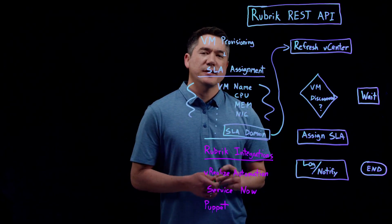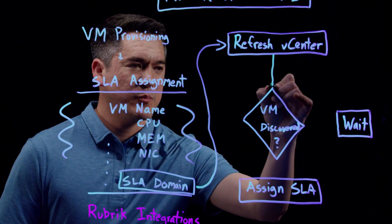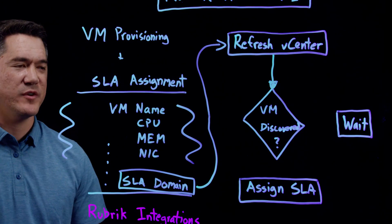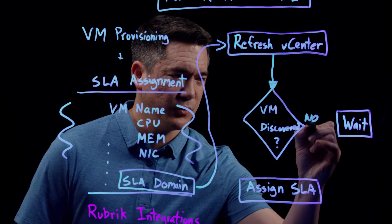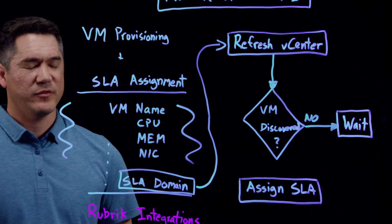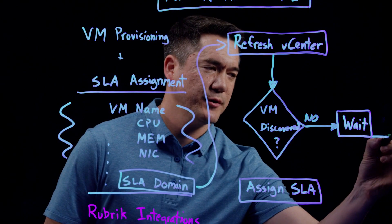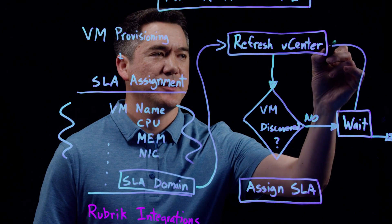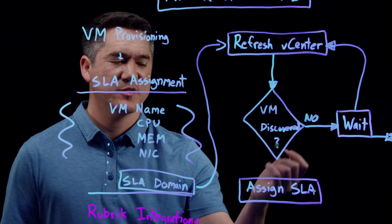We can basically update the vCenter information on Rubrik with a refresh call. Once this is done, we can pass it down to a check — we're going to check to see if this newly provisioned VM is discovered by Rubrik yet. If it's not, if it's taking a little while, we'll pass this on to a wait call. We can wait anywhere from one to five minutes, something reasonable. Now if we're waiting for a long time, we can either time out or pass it back to the refresh vCenter call to do another poll for the VM and check to see if it's been discovered.